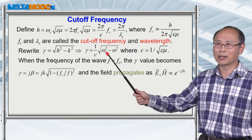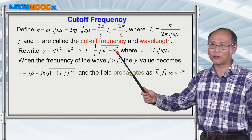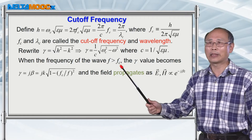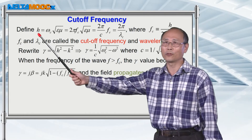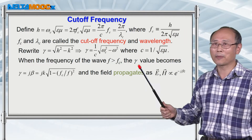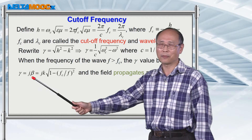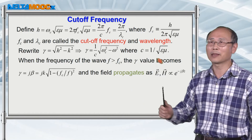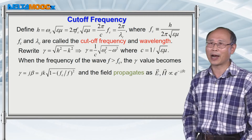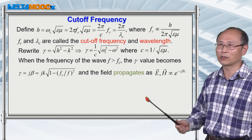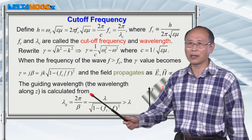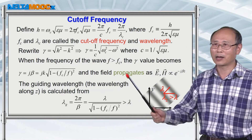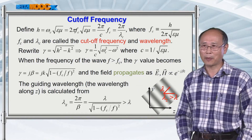For example, if we move the frequency up to a value larger than this cutoff frequency defined through this eigenvalue, then gamma becomes an imaginary number and beta is a real number. This means that with a frequency larger than the cutoff frequency of the waveguide, this field can propagate inside the waveguide. On the other hand, if you vary the frequency in the opposite direction, we're going to show that the wave cannot propagate inside the waveguide.